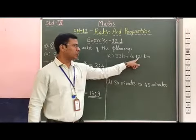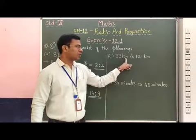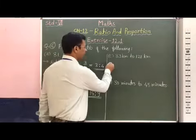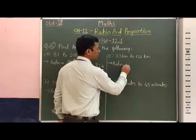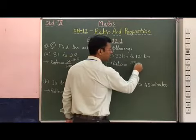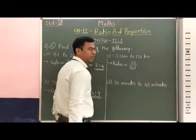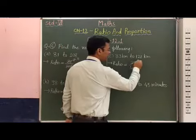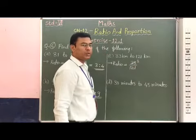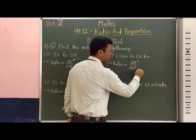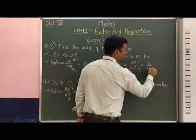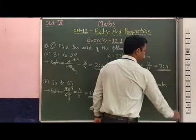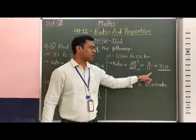Next question: 33 km to 121 km. The units are the same — km and km — therefore we can find out the ratio of these two quantities. We write 33 on the numerator and 121 on the denominator. Both 33 and 121 are divisible by 11. 11 threes are 33, and 11 elevens are 121. Therefore, this is equal to 3 by 11, and the ratio is 3 is to 11.